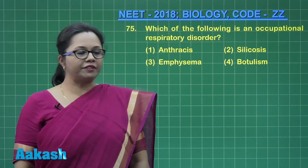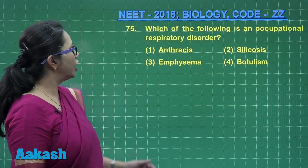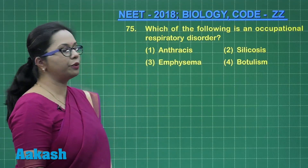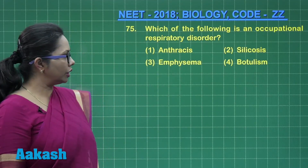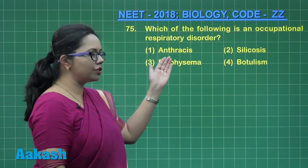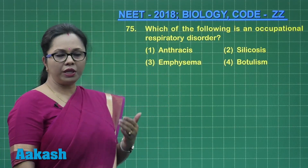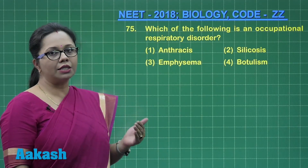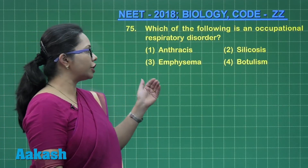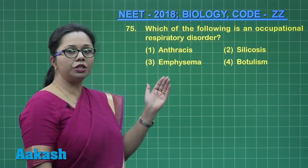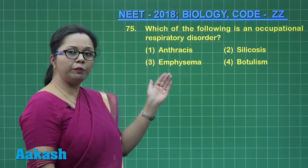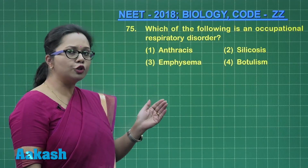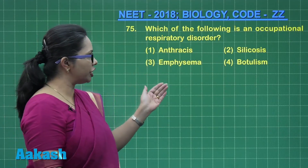Taking up question number 75: which of the following is an occupational respiratory disorder? Anthrax, caused by the bacteria Bacillus anthracis, is usually a disease that occurs in people working as wool sorters with sheep.